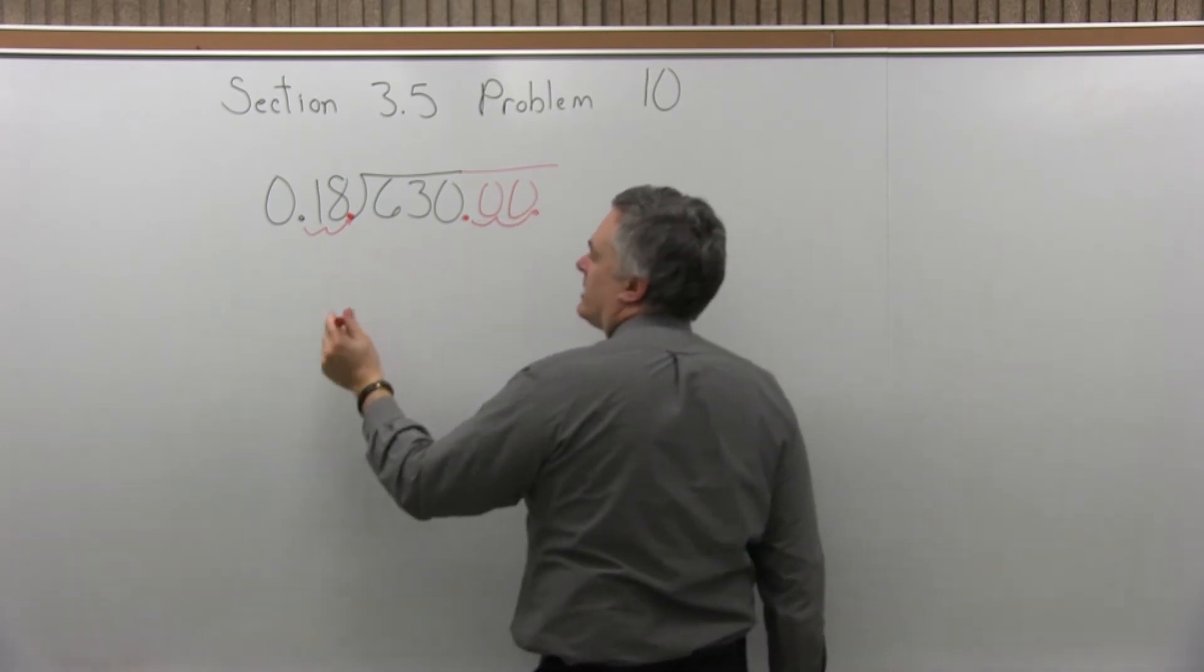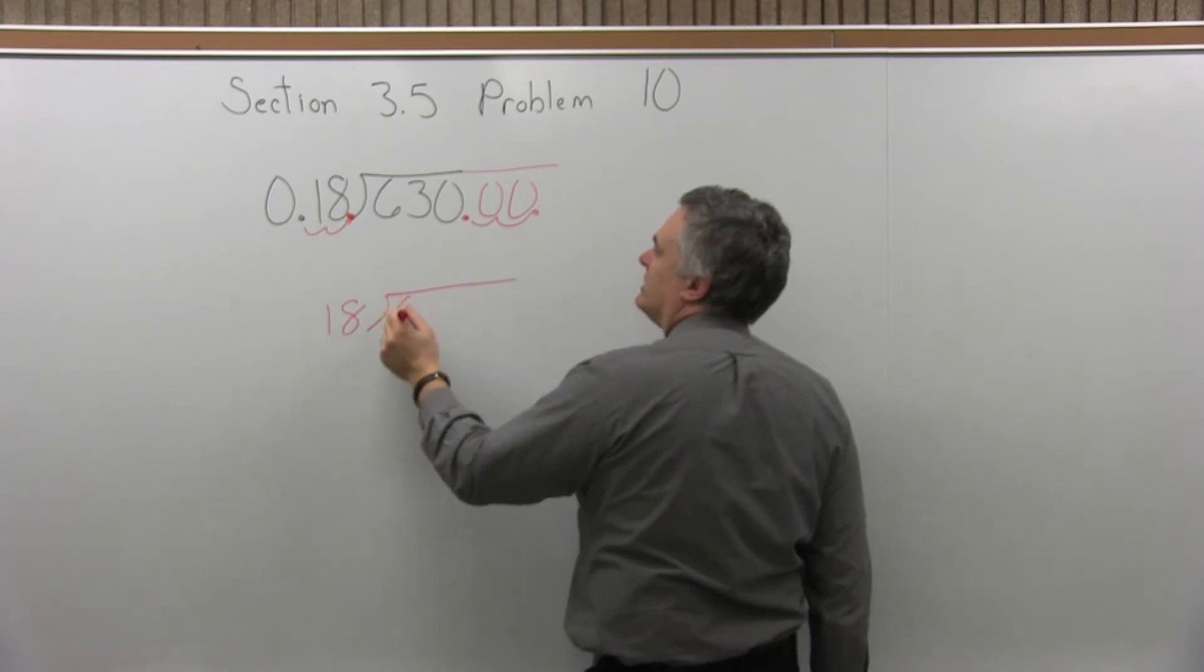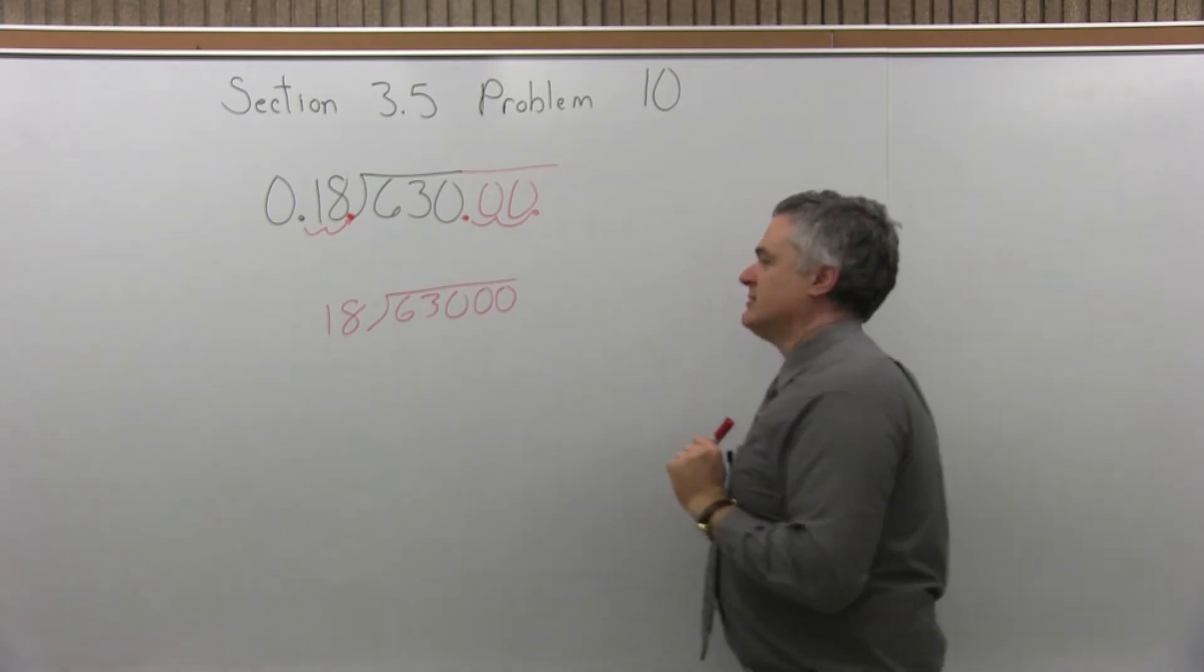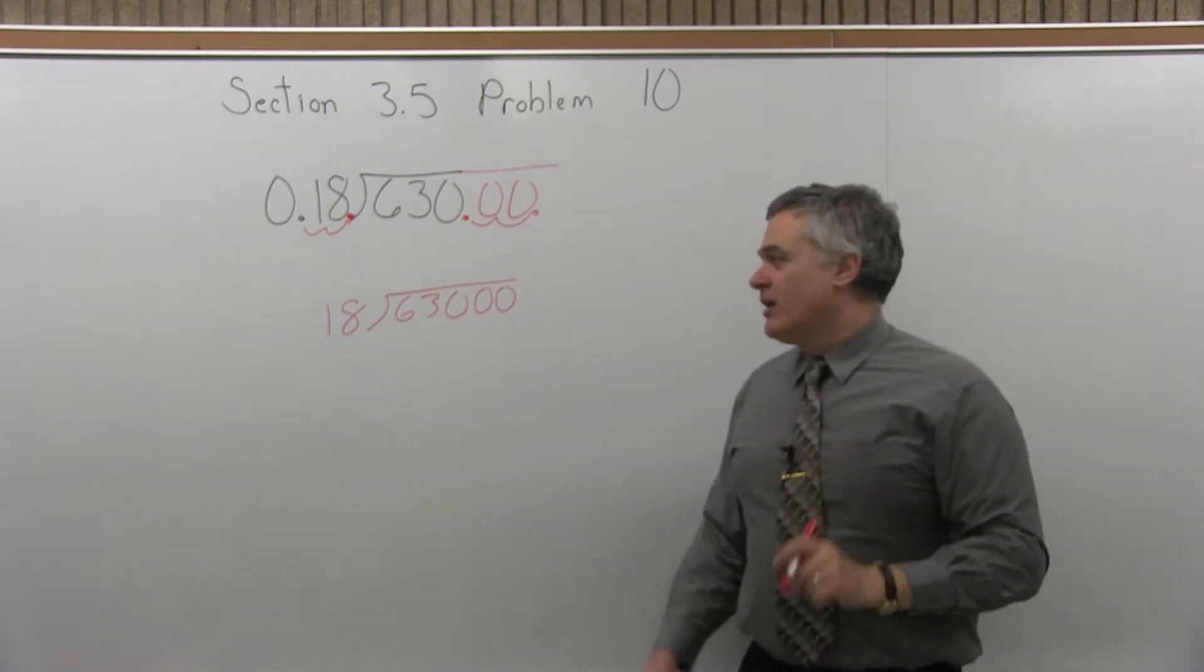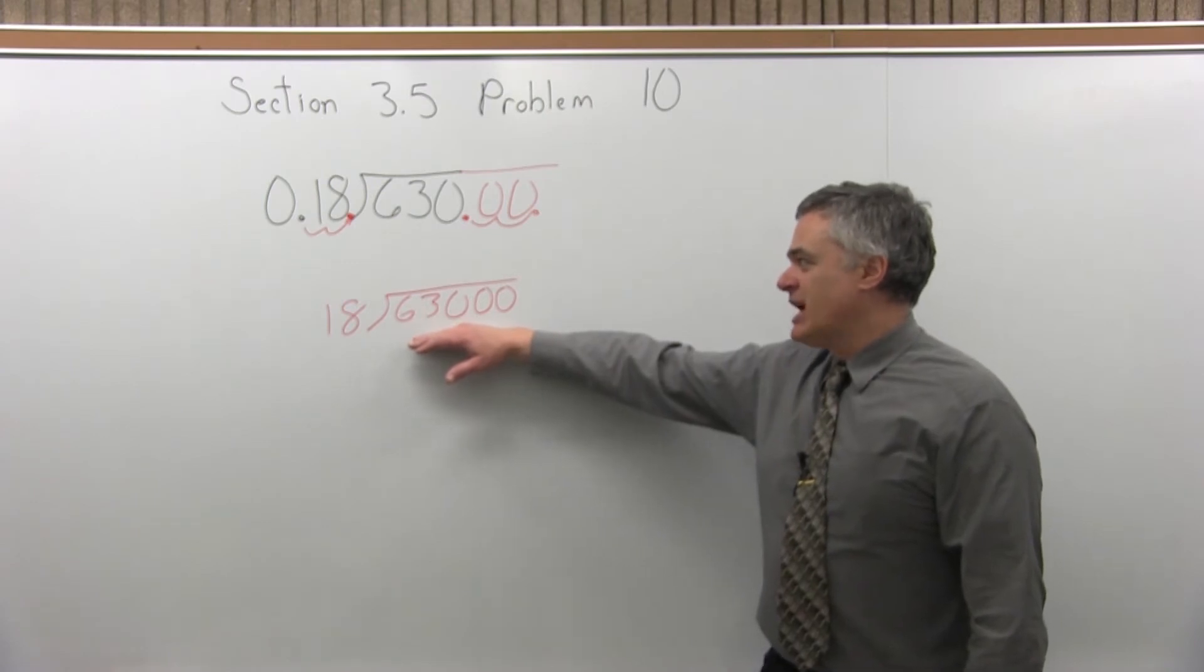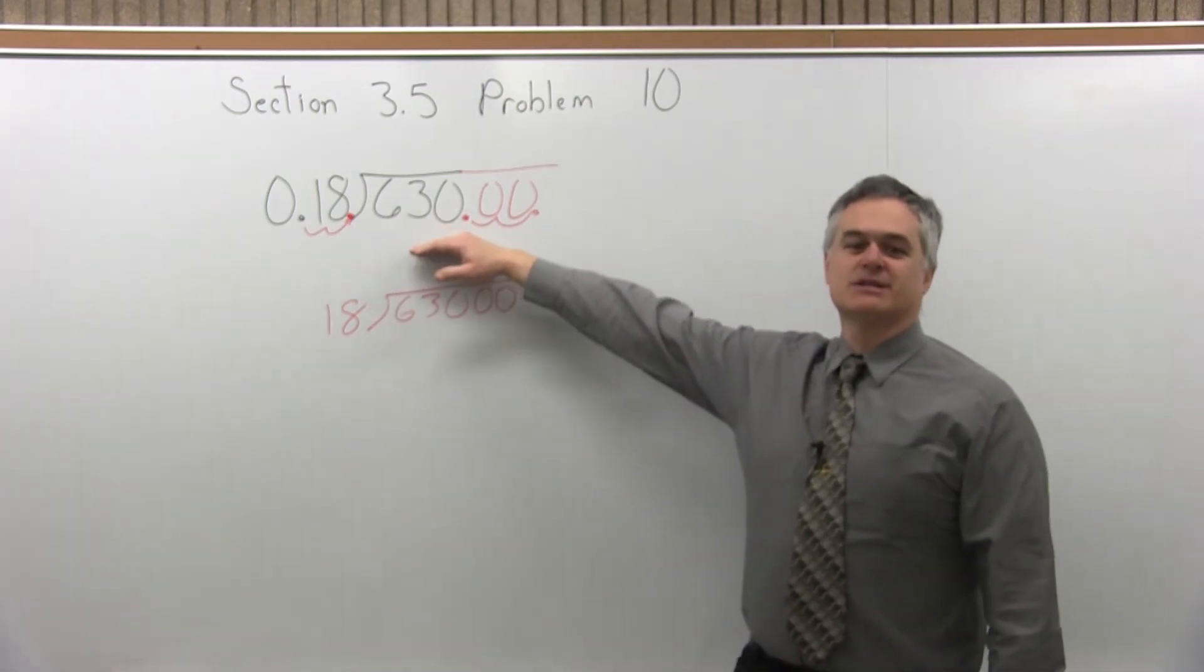So that rewrites the problem, basically, as 18 divided into 630, and then two more zeros. And whatever the answer is for that division problem, 18 divided into 63,000, is the same answer for 0.18 divided into 630.